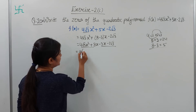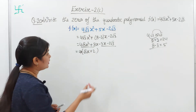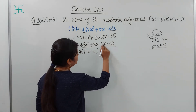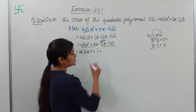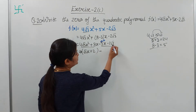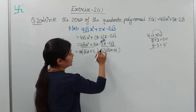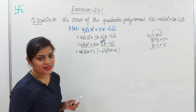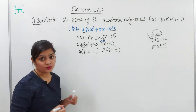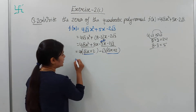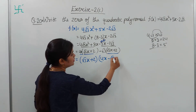Expanding: 4root3·x² plus 8x minus 3x minus 2root3. Taking common from first two terms — 4x is common: 4x(root3·x plus 2). From last two terms, minus root3 is common since 3 = root3×root3: minus root3(root3·x plus 2). Now (root3·x plus 2) is common from both brackets, so we get: (root3·x plus 2)(4x minus root3).